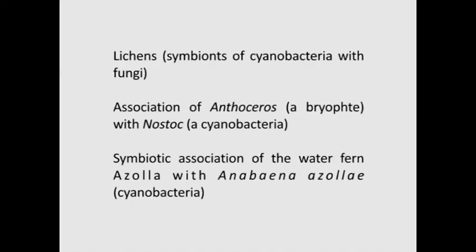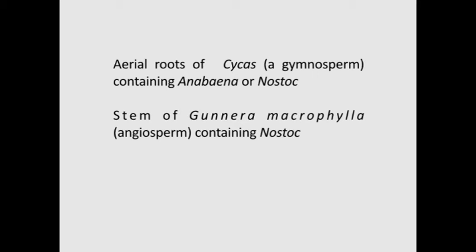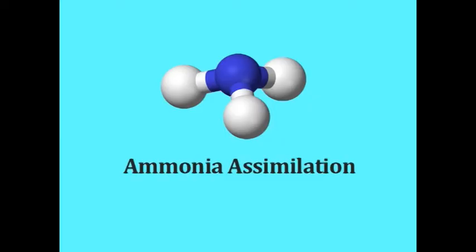Nitrogen fixation without nodulation also takes place in some plants through symbiotic association but without forming root nodules. Examples include lichens, which are symbionts of cyanobacteria with fungi; Anthoceros, a bryophyte, in association with Nostoc; the water fern Azolla with Anabaena azollae; aerial roots of Cycas containing Anabaena or Nostoc; and the stem of Gunnera macrphylla, an angiosperm, containing Nostoc.